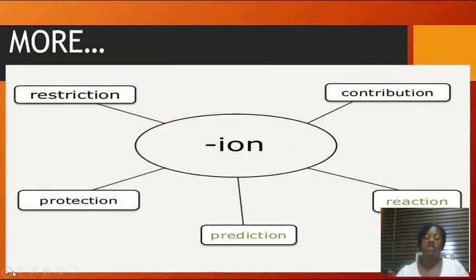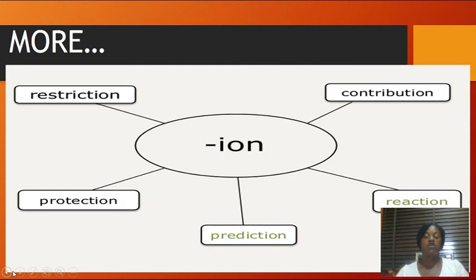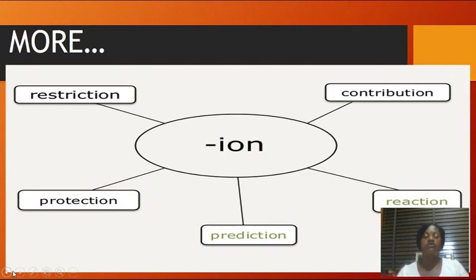More suffixes: the suffix -ion. 'Restrict' is a verb; when you add -ion, it gives you 'restriction,' a noun. Similarly, 'contribute' plus -ion gives 'contribution.' We also have 'reaction,' 'prediction,' and 'protection.' The addition of the suffix -ion automatically changes the word class from verb to noun. All these — the five examples on screen — are nouns.